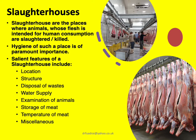Finally, there are miscellaneous steps — animals other than those to be slaughtered should not be allowed inside the shed of those animals which are to be slaughtered. To summarize the salient features of slaughterhouses: location, structure, disposal of waste, water supply, examination of animals, storage of meat, temperature of meat, and the restriction on non-slaughter animals entering the slaughter shed.